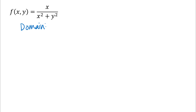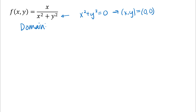The domain of this function is going to be all of R² except any values that would make the denominator zero. The only values that would make x² + y² equal to zero would be just the origin — that is, (x, y) equal to the origin. So we want to exclude that from the domain. The domain is the set of all (x, y) in R² such that (x, y) is not equal to the origin.